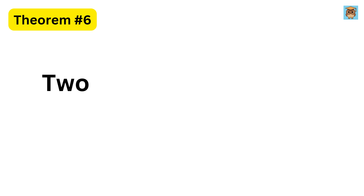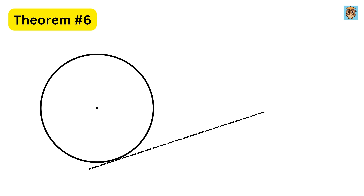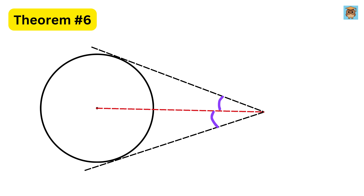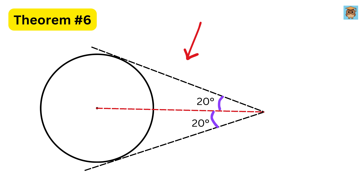Theorem six: the two tangents theorem. If two tangents are drawn to a circle from a single external point, then these tangents will always be equal in length. Another important property is that the line joining the external point to the center of the circle always bisects the angle formed between the two tangents. So if this angle is 40 degrees, then both these angles will be equal to 20 degrees, and if this length is equal to 5 units, then this piece will also be equal to 5 units.